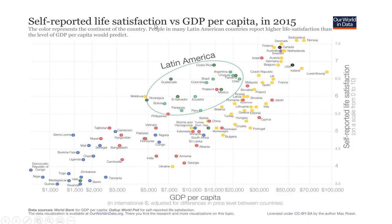Looking at self-reported life satisfaction versus GDP per capita: on the horizontal axis we have GDP per capita, ranging from 1,000 to 100,000. And here we have self-reported life satisfaction in a bunch of different countries. You can see there is a positive relationship — as per capita GDP goes up, people tend to report higher life satisfaction.